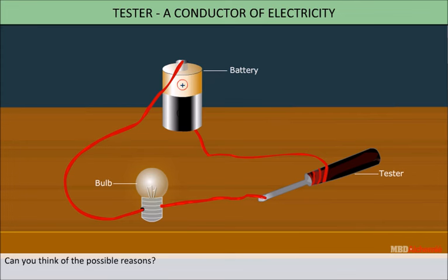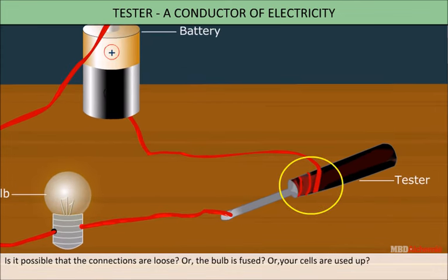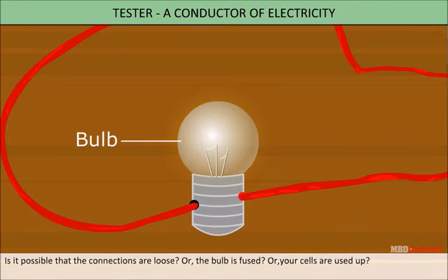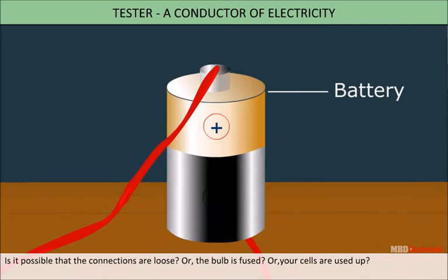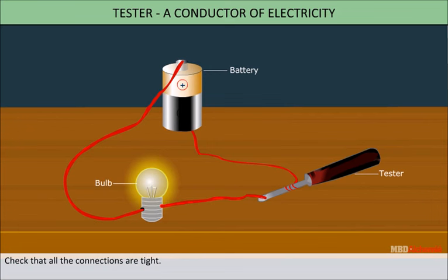Can you think of the possible reasons? It is possible that the connections are loose, or the bulb is fused, or your cells are used up. Check that all the connections are tight. From this activity we conclude that the tester is a conductor of electricity.